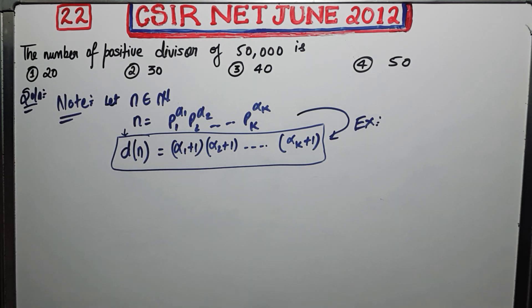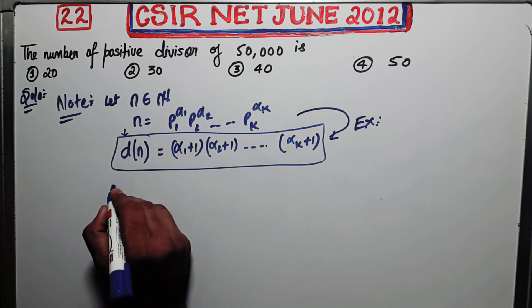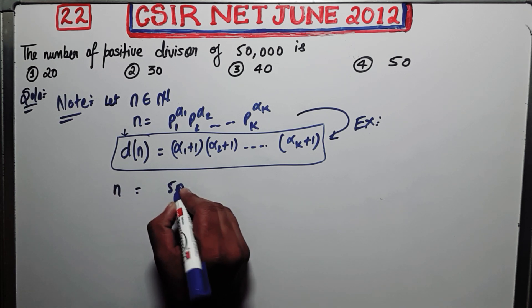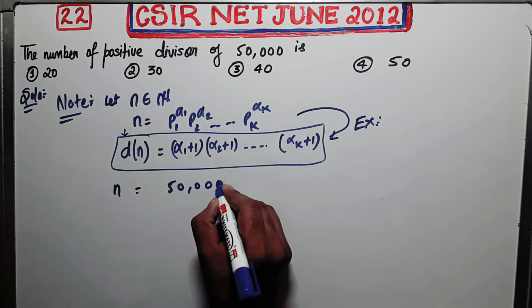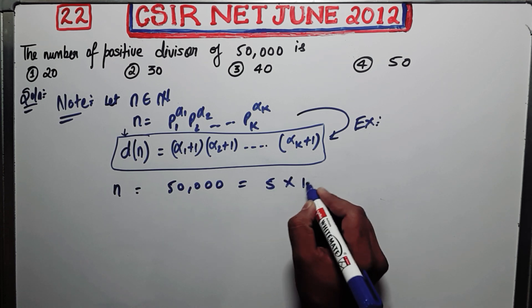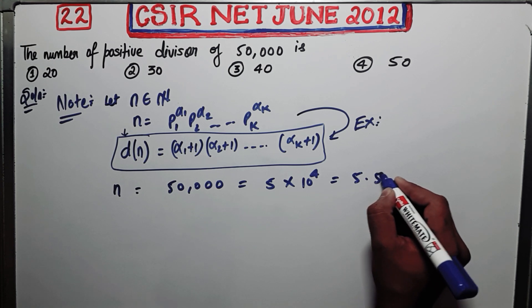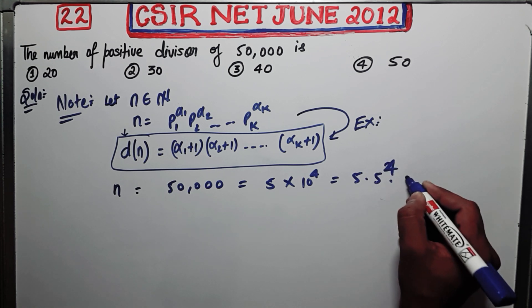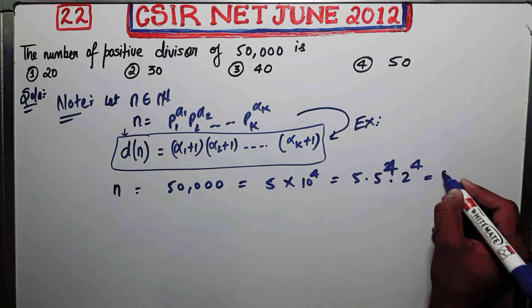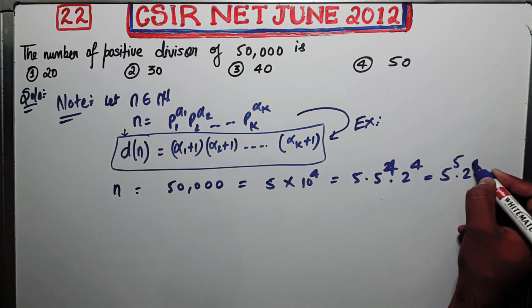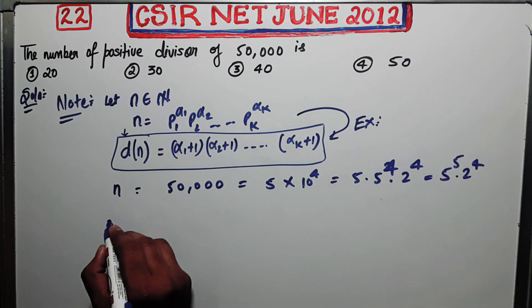Now I am taking this formula as granted. So what is your number? Your number is 50,000. That means you have 5 × 10^4. Now you can write your number as 5 × 5^4 × 2^4, that means 5^5 × 2^4. So from here what you can do?